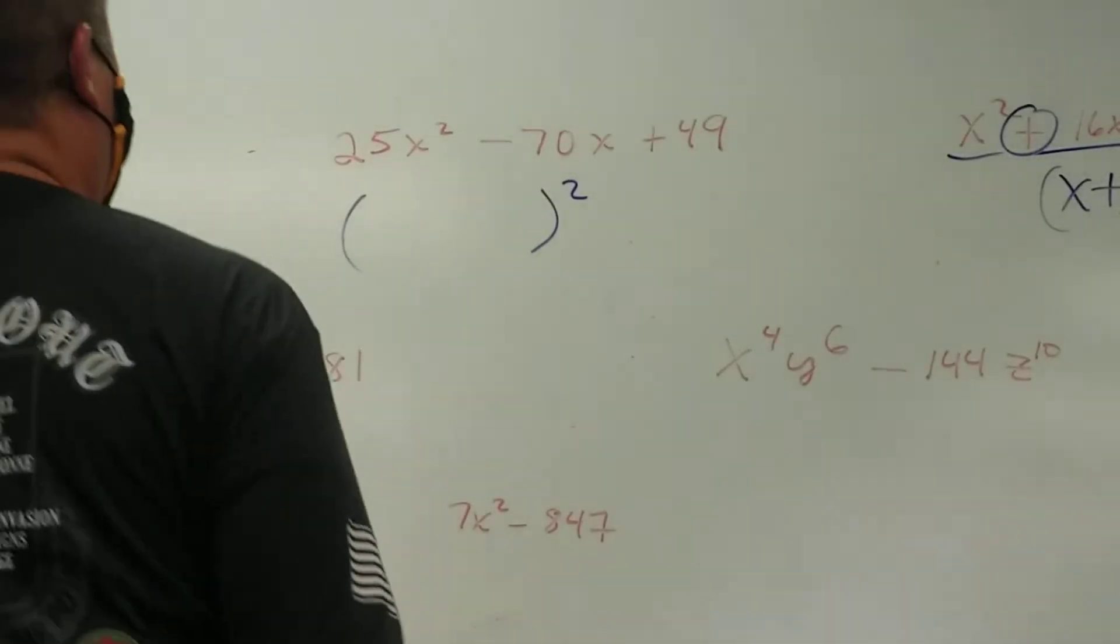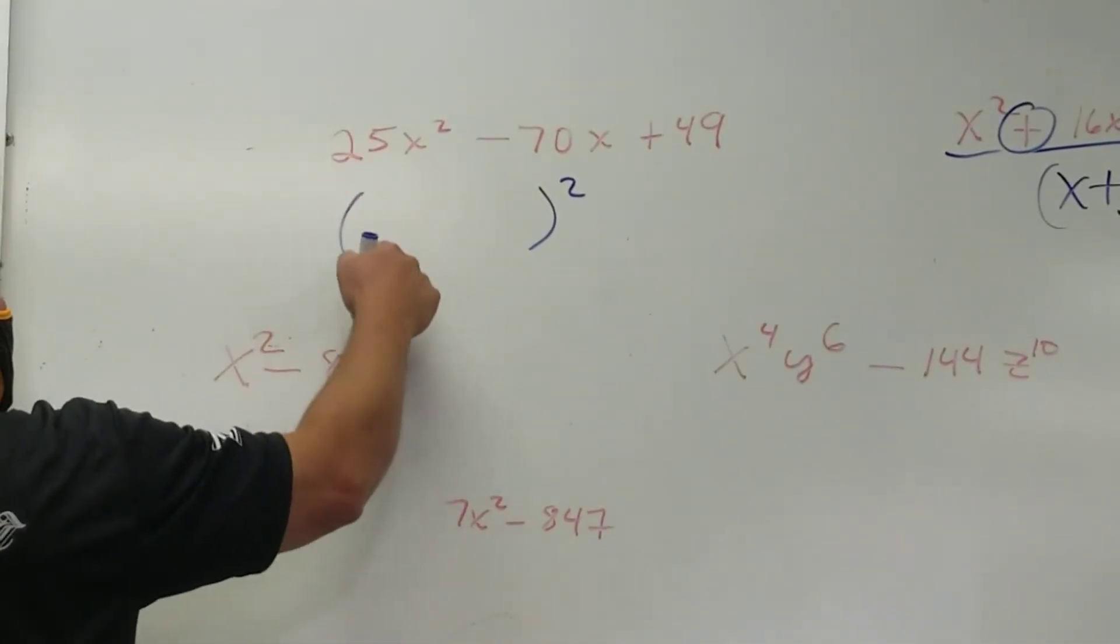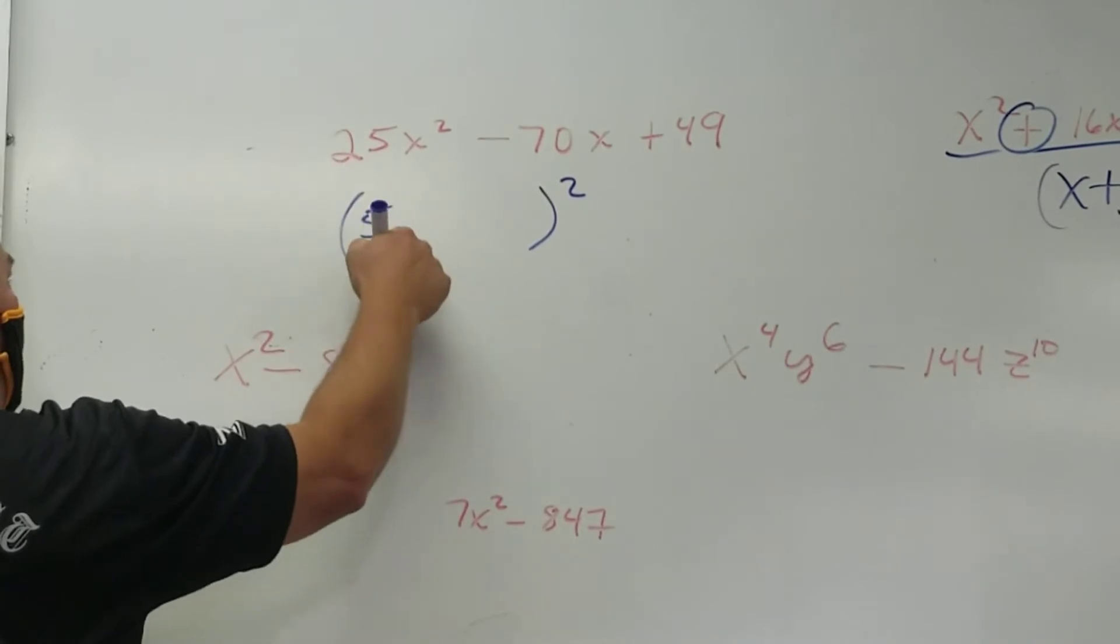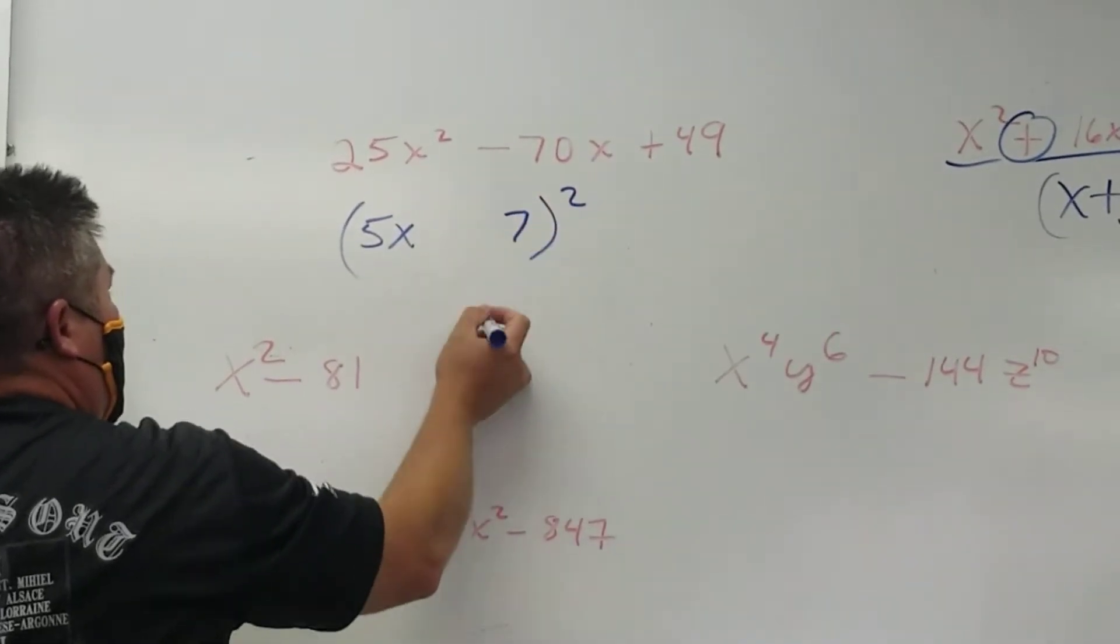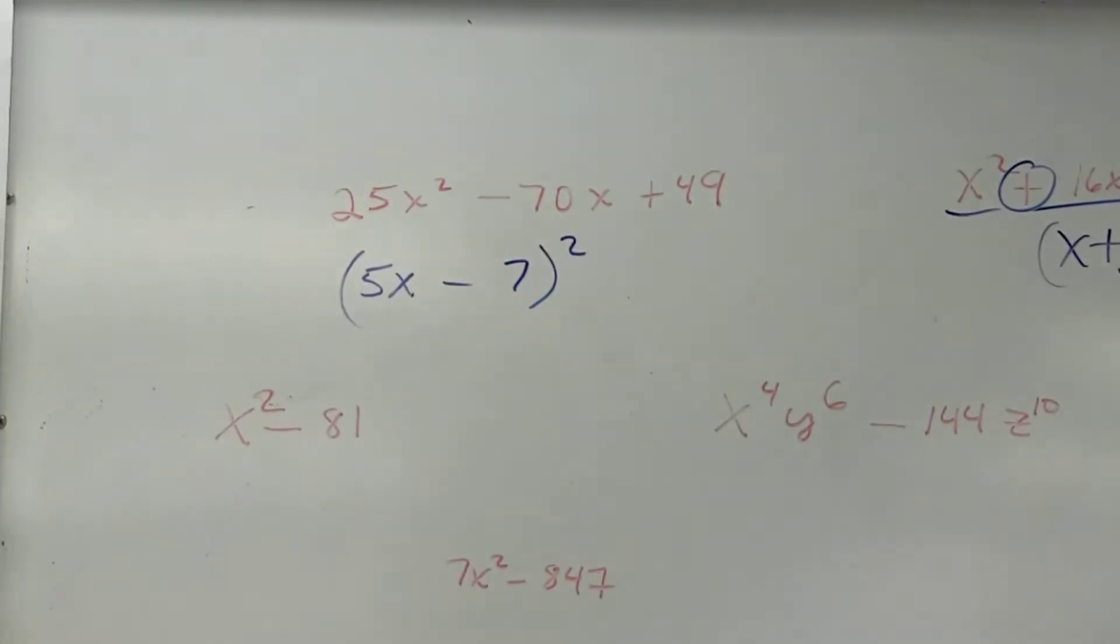So what should I write here? Just the square root of the first term. 5x. And the square root of the last term. 7. Sign in the middle. Done. Didn't even have to do box or nothing else.